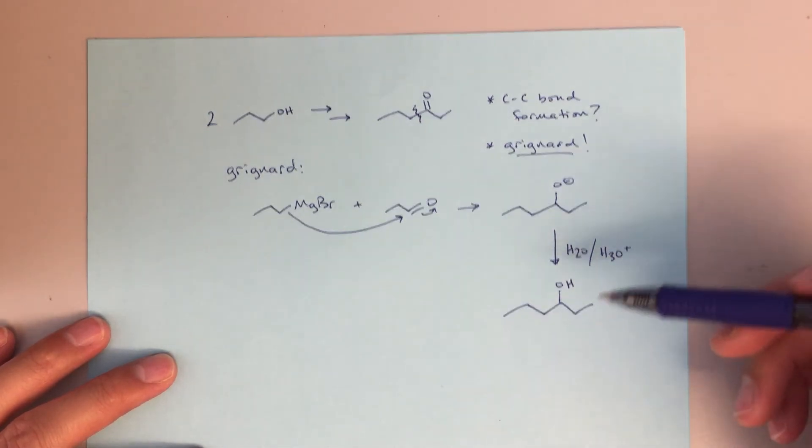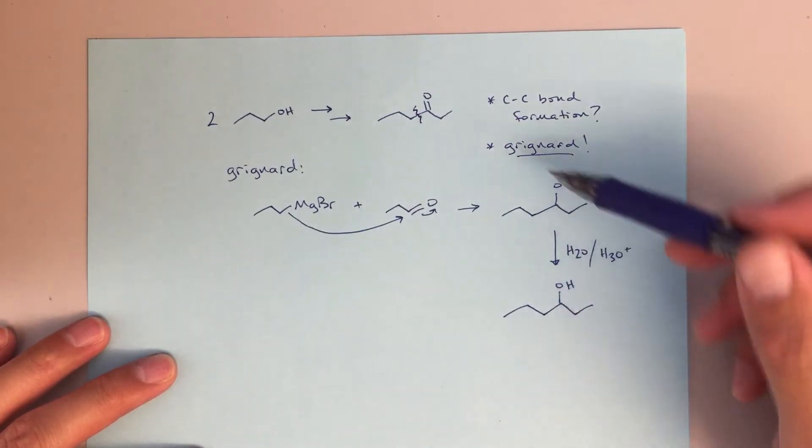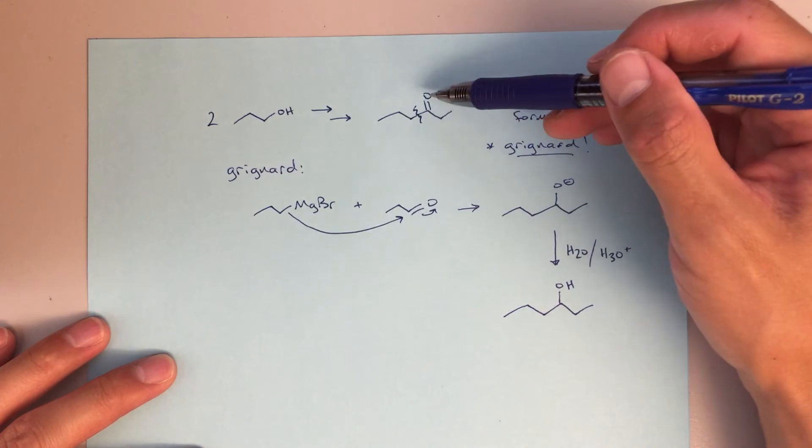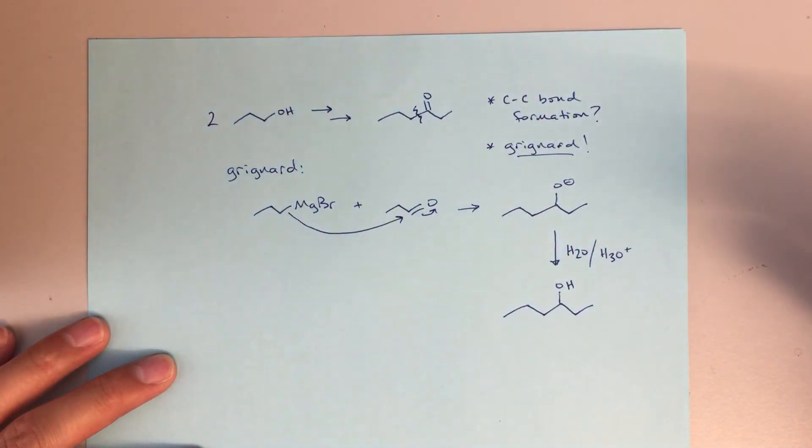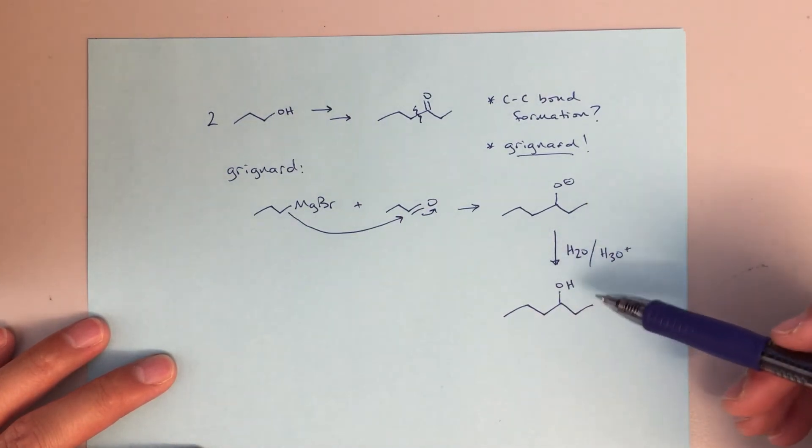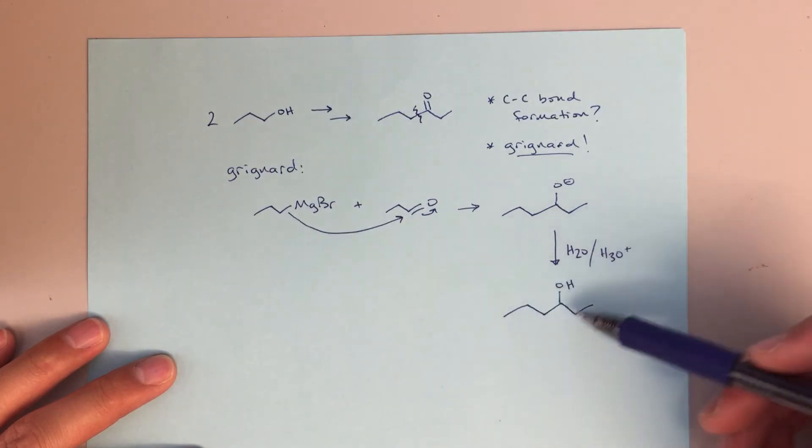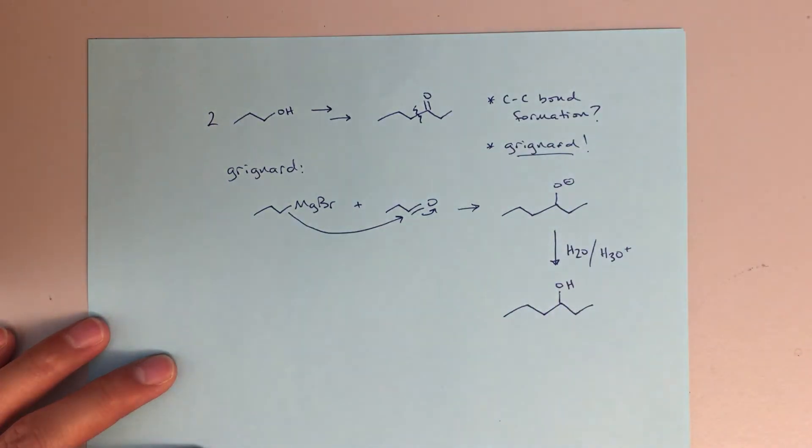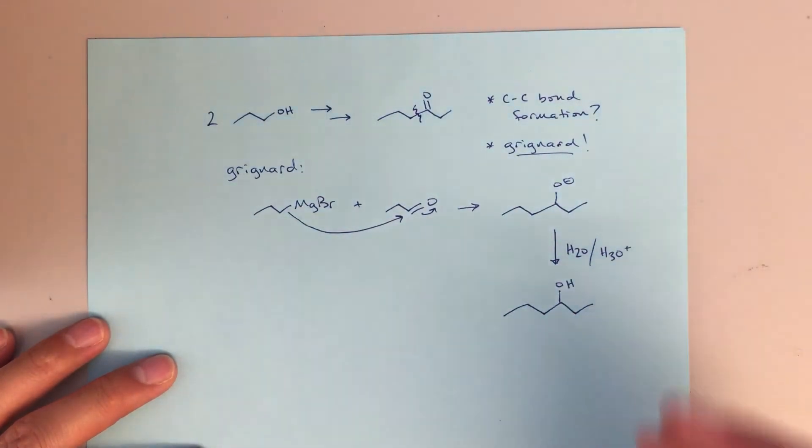And now the question is, can we really convert an alcohol into our final product, into a ketone? Is there a way that we know how to do that? Hopefully you're thinking, that's an oxidation and there's really two ways to do an oxidation, chromic acid or PCC and dichloromethane. So either of those would really work. Chromic acid might be a little faster, but really either one would be totally fine to go from this alcohol to our final ketone product. So that's good. We sort of have the end part figured out.